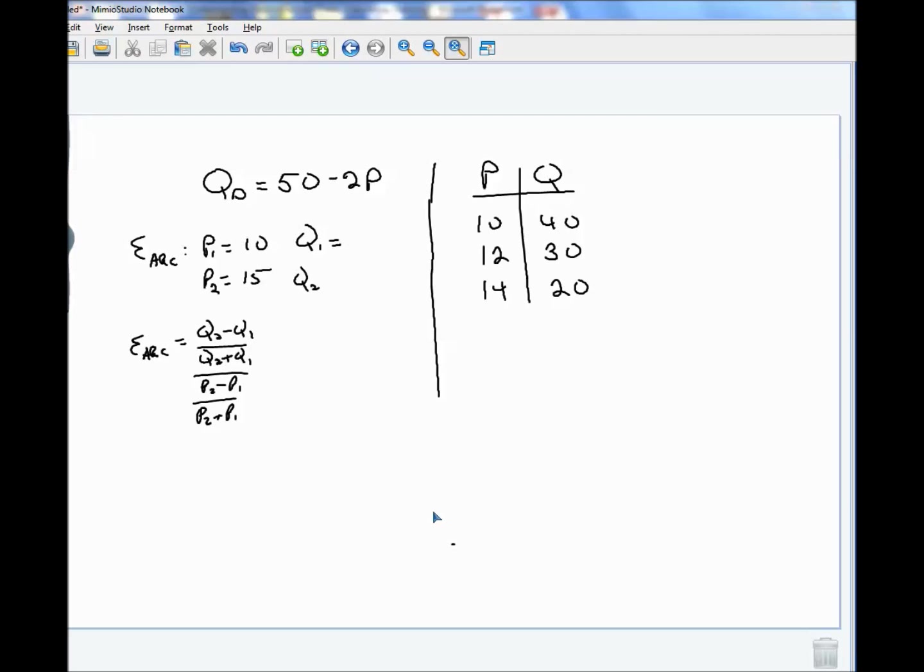So we need the Q values that go with that. So based on this equation, if P is 10, Q is 50 minus 2 times 10. 2 times 10 is 20. 50 minus 20 is 30.